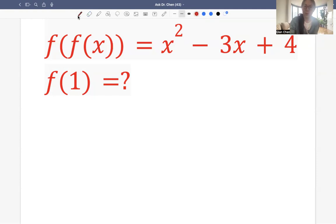So how do we do that? Let's evaluate when x equals 1 for the compositional function. So we get f composed with itself at 1. We just plug in 1 for x. We get 1 squared minus 3 times 1 plus 4. For 1 plus 4, 5, 5 minus 3, 2. So we get 2.